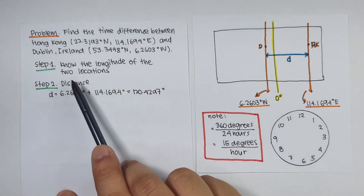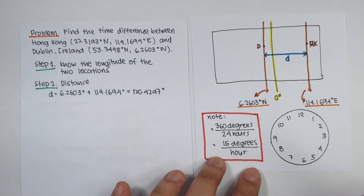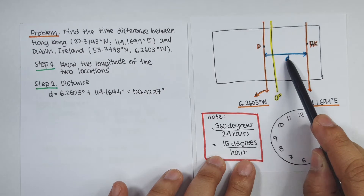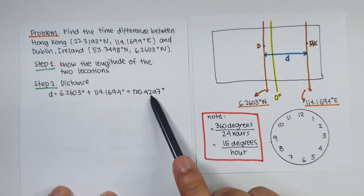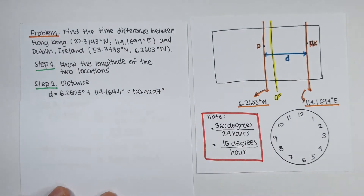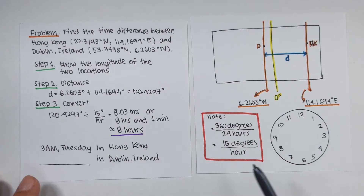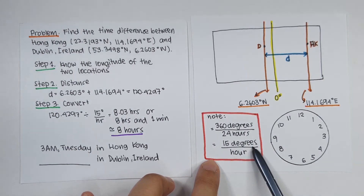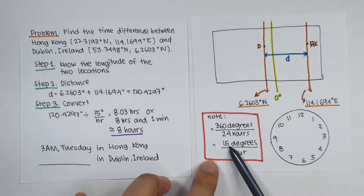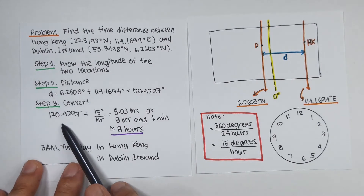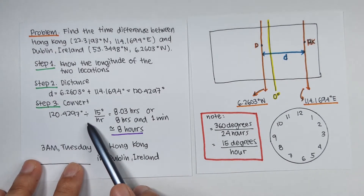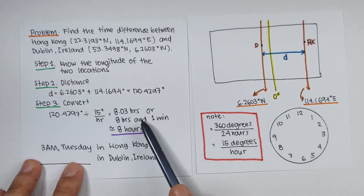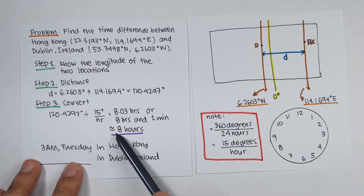Step number two is to get their distance apart in terms of longitude. Their distance apart is 6.2603 degrees plus 114.1694 degrees, which equals 120.4297 degrees. Step number three is to convert: 360 degrees divided by 24 hours gives 15 degrees per hour, meaning every 15 degrees equals one hour time difference. So 120.4297 divided by 15 degrees per hour equals approximately 8 hours.